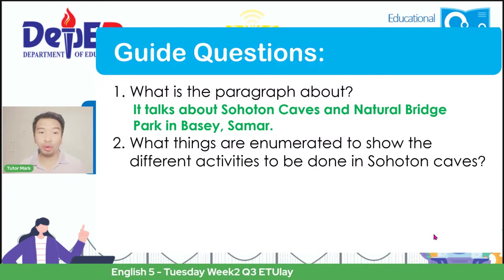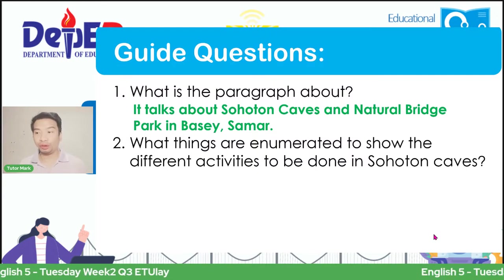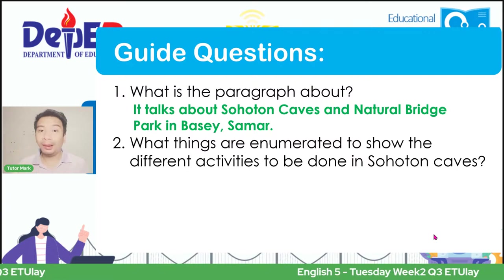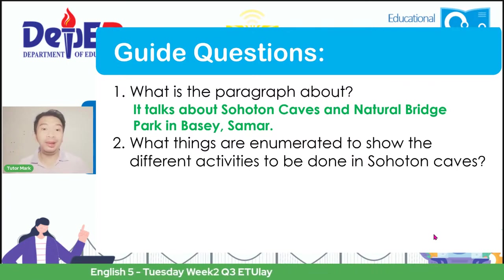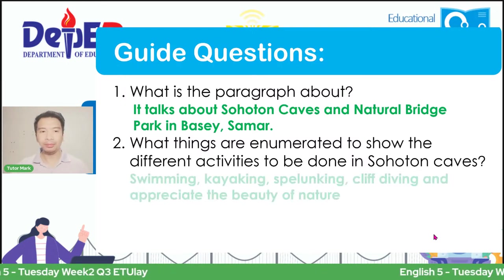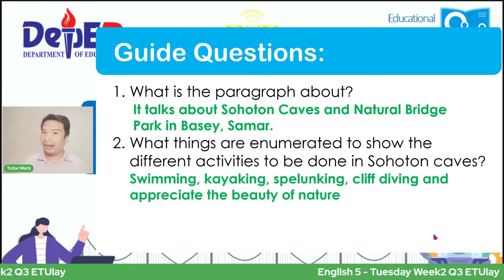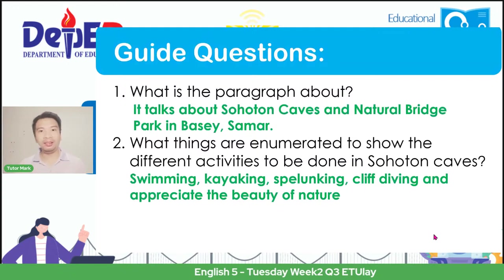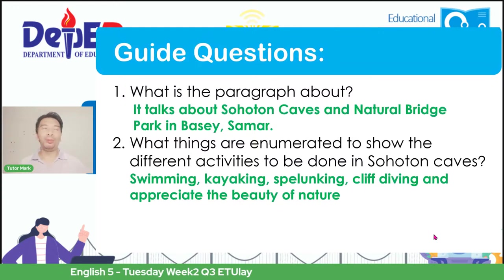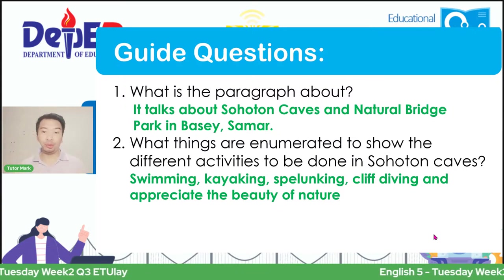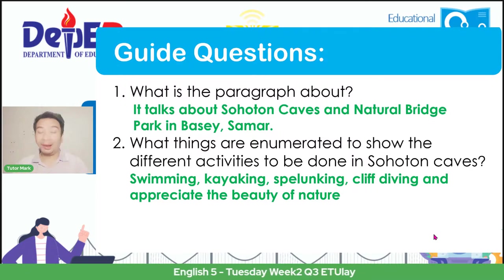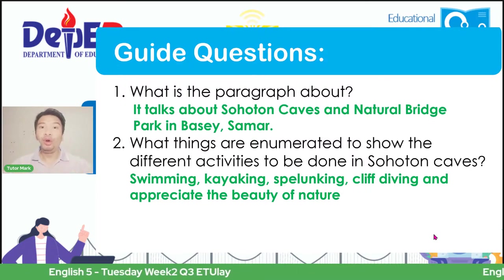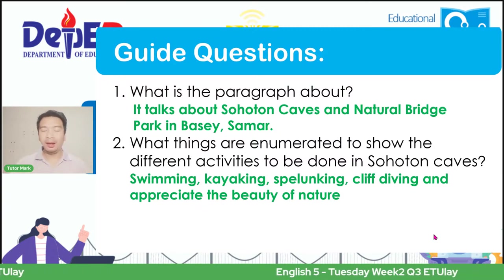Did you notice? It matches what I was saying. We need to elaborate one by one and enumerate them. These are the following: swimming, kayaking, spelunking, cliff diving, and if you are afraid of swimming or extreme adventure, then you can appreciate the beauty of nature. These are the different activities mentioned in the context. Notice how the long context is now getting shorter.